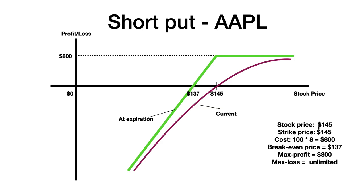The stock price is trading at $145 and we enter a short put position at $145, which is an at-the-money short option. The total profit is $800 because although the contract has a premium of $8, one contract represents 100 underlying stocks, so we multiply by 100 to get the total profit of $800.